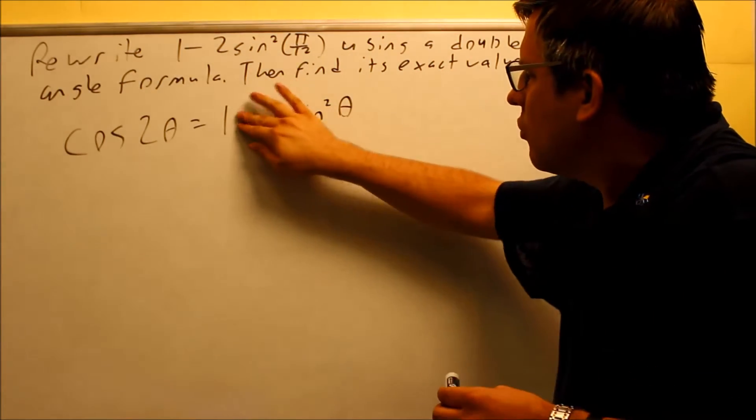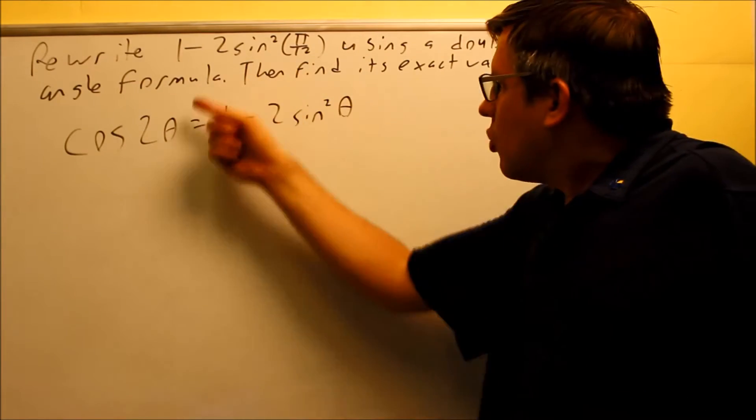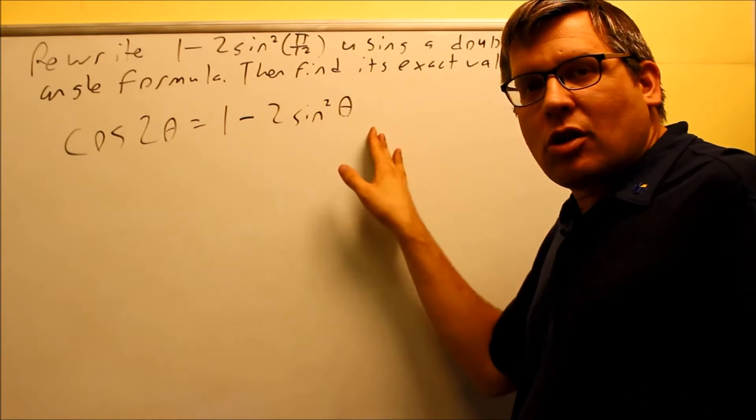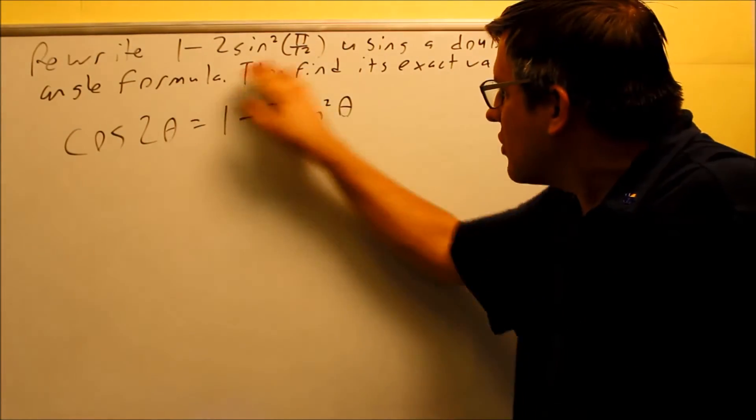So you always want to see which one works. We're going to take the right hand side of the formula, and we're actually going to rewrite it into the left hand side. That's what this problem wants you to do, is recognize that you have this, and we'll be able to take it over into cosine 2θ.